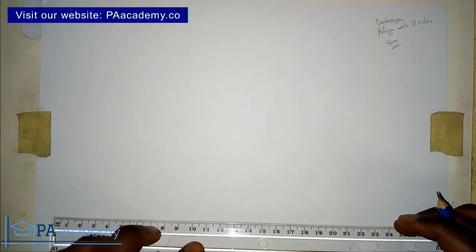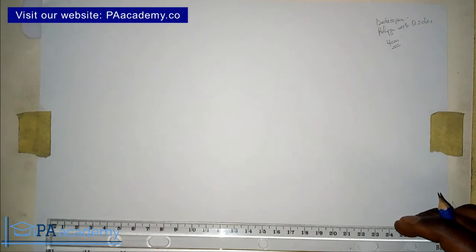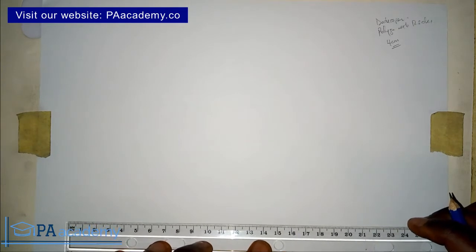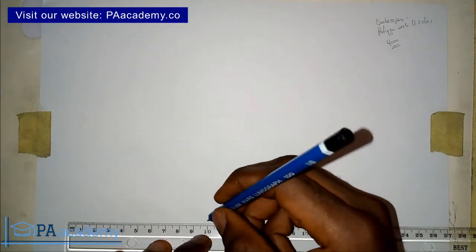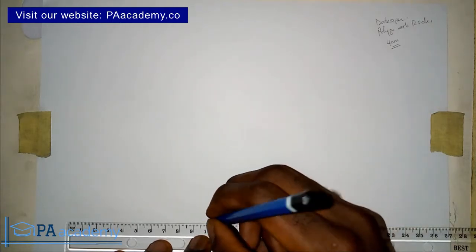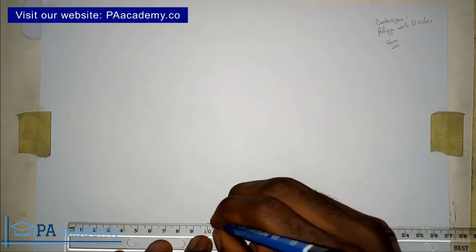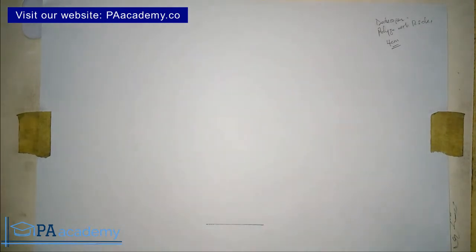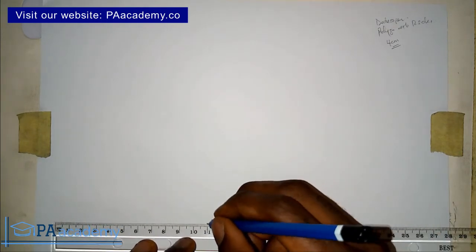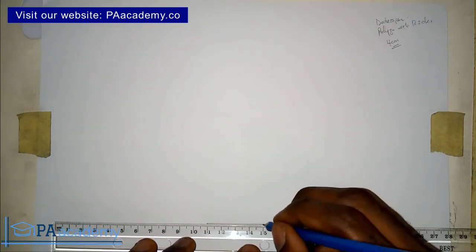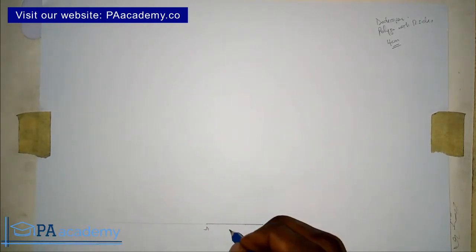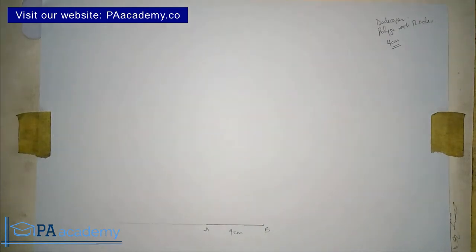To start with, you are going to draw one side of the dodecagon. I'm using 4 centimeters, so from this point to this point represents 4 centimeters. Draw that side and also extend it to the left with a faint line. Let's call this line AB — this is one side, 4 centimeters.